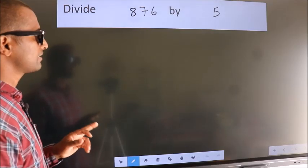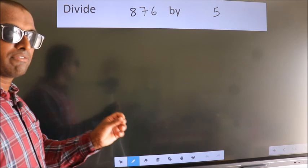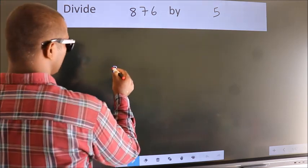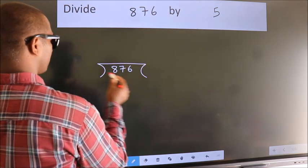Divide 876 by 5. To do this division, we should frame it in this way: 876 here, 5 here.